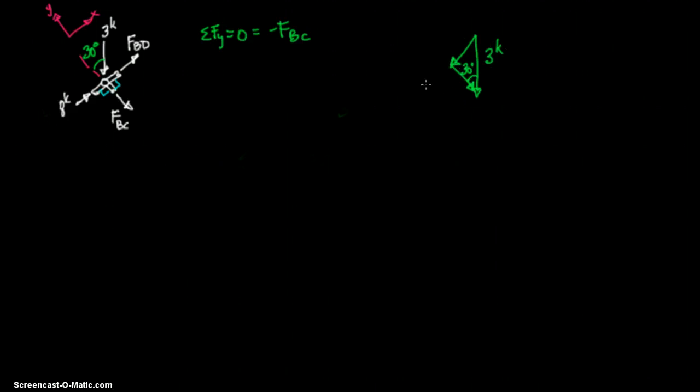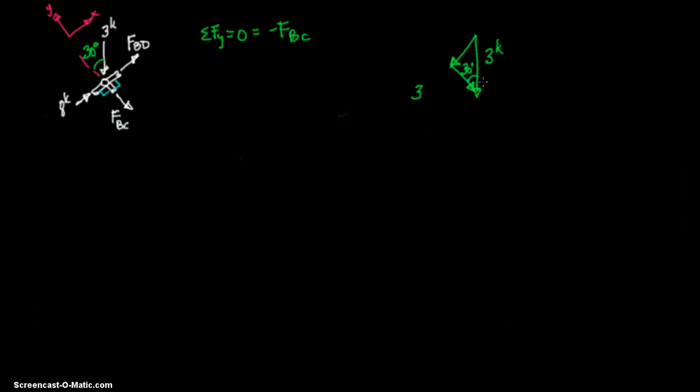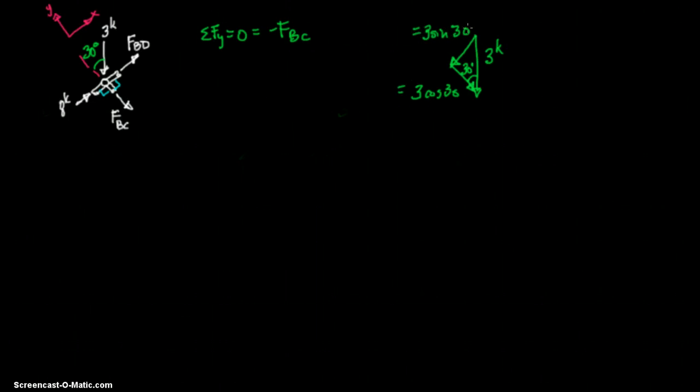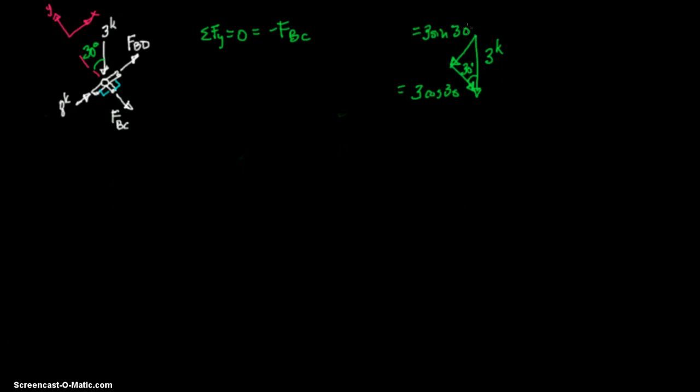So that's what we're looking at. We know this is 30 degrees. When you have these things and you know the hypotenuse, you're always going to use sine and cosine. So we're going to define this as 3, and it's adjacent, so we're going to call it cosine 30. And this is opposite, so it's 3 sine 30.